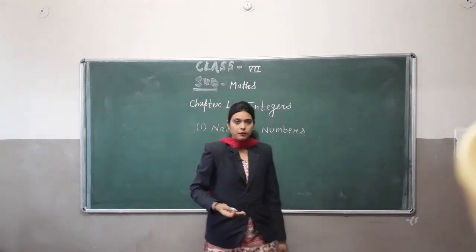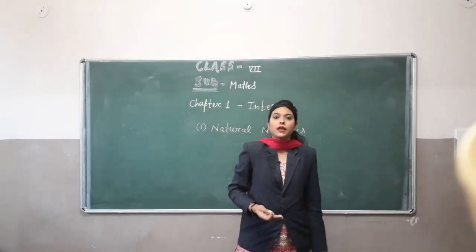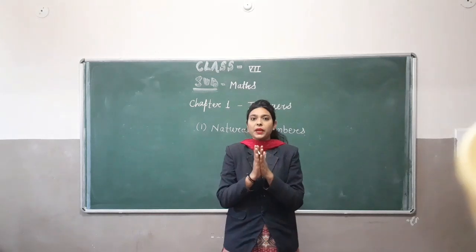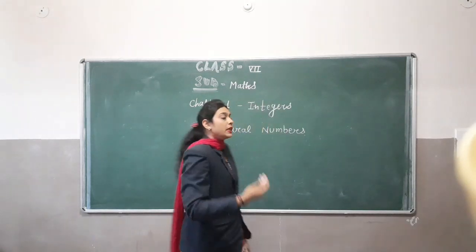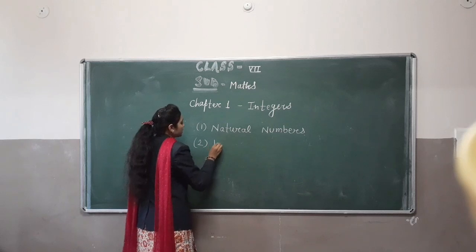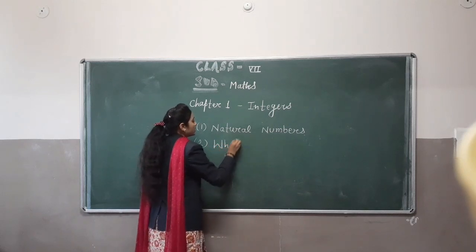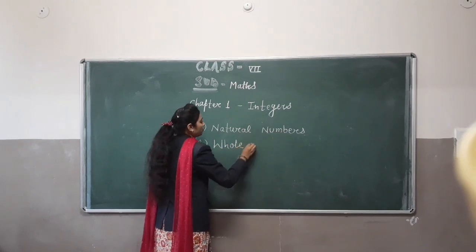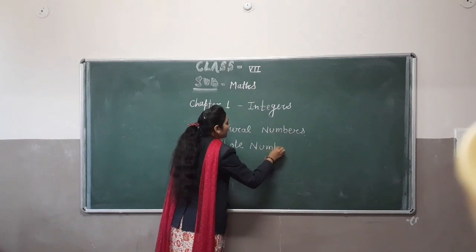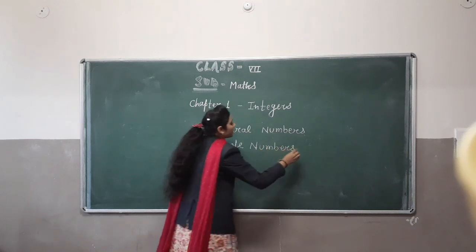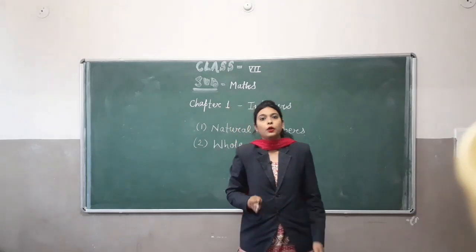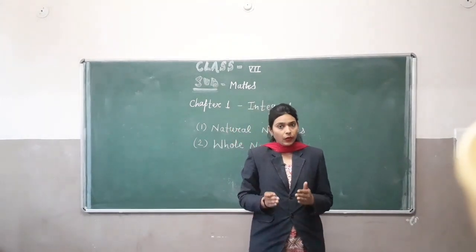Just after natural numbers, if we add 0 to the natural numbers, it will become whole numbers. It means whole numbers start from 0 to plus infinity. All the numbers from 0 to plus infinity are whole numbers.